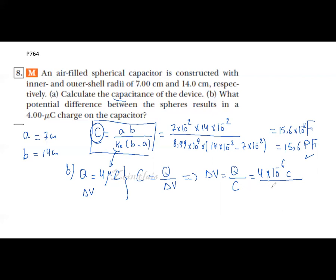Which is equal to 15.6 times 10 to the minus 12 farads. Okay, the answer will be 2.56 times 10 to the minus 3 volts, or we can say 2.56 kilovolts. This is the answer.